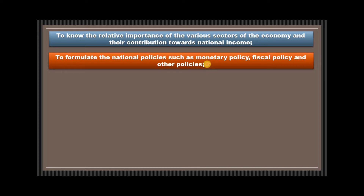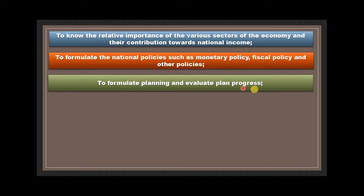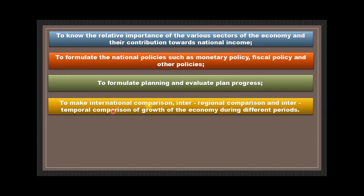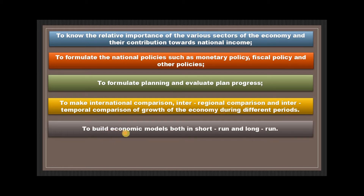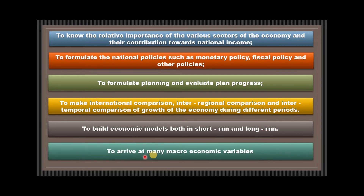National income data is also essential for formulating planning and evaluating plan progress. Data pertaining to a country's gross income, gross output, and gross saving from different sources is needed for economic planning. It also enables international comparison, regional comparison, and temporal comparison of economic growth during different periods. National income is important to build economic models both in the short run and the long run, and to arrive at many macroeconomic variables such as the tax-to-GDP ratio, current account deficit, and fiscal deficit.